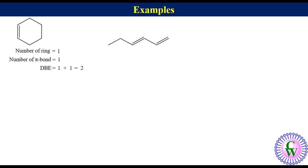Hexadiene, number of ring is equal to 0, number of pi bonds is equal to 2. So DBE is equal to 0 plus 2 is equal to 2.